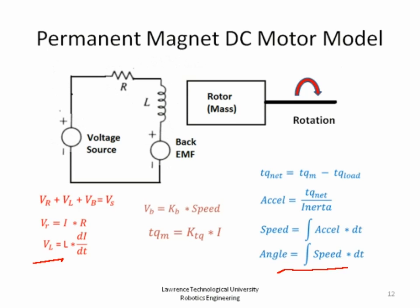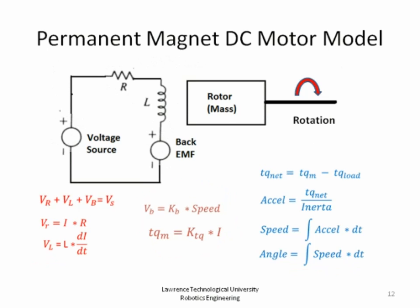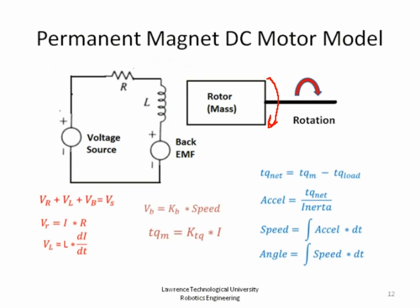In between the electrical and mechanical equations, we have two coupling equations. The bottom one says the torque of the motor is a proportional constant K times the current — so current on the electrical side times K gives torque on the mechanical side. For the back EMF, it is a proportional constant times the speed of the motor. So the rotation of the motor generates this back EMF voltage, which opposes the flow of current from the external source. These two equations couple the electrical side with the mechanical side.